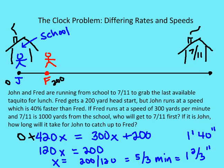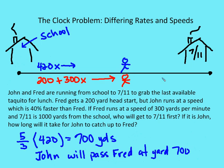At one minute 40 seconds, we substitute this value back in for x. We can do that in either equation and should get the same distance — the point where John catches Fred. I see that 420x equals 200 plus 300x. I multiply five-thirds of a minute times 420 yards per minute and get 700 yards. So at 700 yards, John is going to catch up and then pass Fred. Since 7-Eleven is 1,000 yards away, John is going to get to the taquito first.